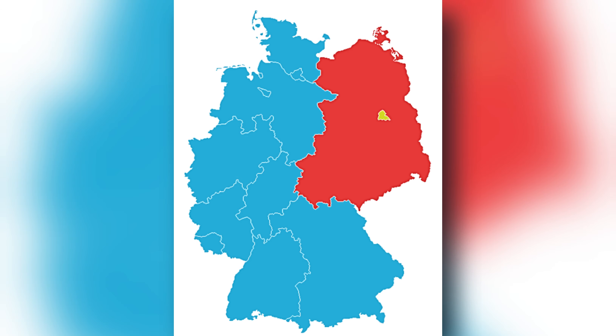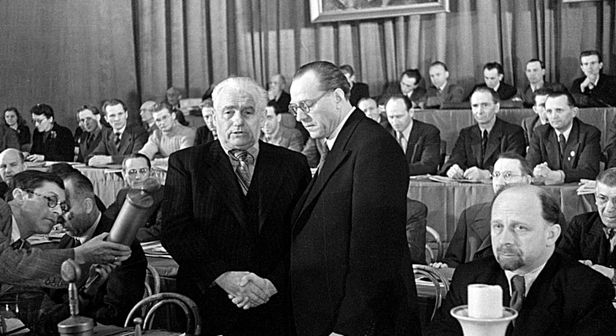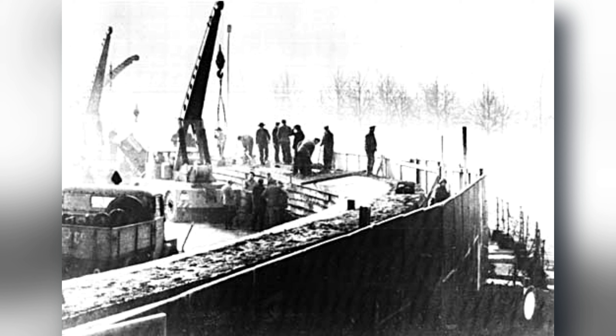By 1949, two German states had emerged: the Federal Republic of Germany, or West Germany, and the German Democratic Republic, or East Germany. In the years leading up to the construction of the wall, over three million East Germans fled to the West, seeking freedom and better economic opportunities. For the communist regime in East Germany, this brain drain was unsustainable. So in August 1961, the Berlin Wall was erected overnight, catching the world by surprise.